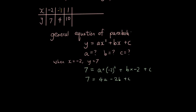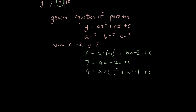I'm now going to repeat the same process with x is negative 1, y is 4. So 4 equals a times negative 1 squared, substituting negative 1 for x and 4 for y, plus b times negative 1 plus c. Simplifying by removing the brackets: negative 1 squared is just 1, so I have 4 equals a minus b plus c.